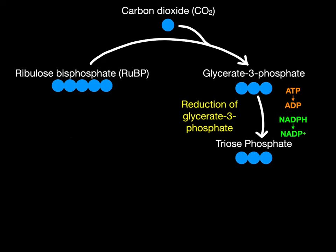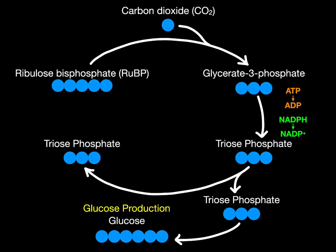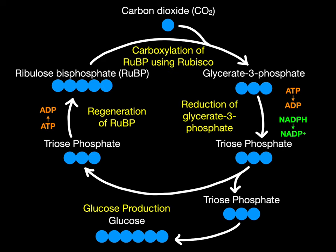Of the triose phosphate, some of it is removed from the cycle while the rest is used to continue the Calvin cycle. That which is removed from the cycle is ultimately used to form glucose, which is our primary objective in photosynthesis. The rest of the triose phosphate is used to regenerate RUBP so that the Calvin cycle can continue, which again requires ATP broken down into ADP. And so the cycle continues with carboxylation of RUBP using Rubisco, reduction of glycerate three phosphate, followed by glucose production and regeneration of RUBP.